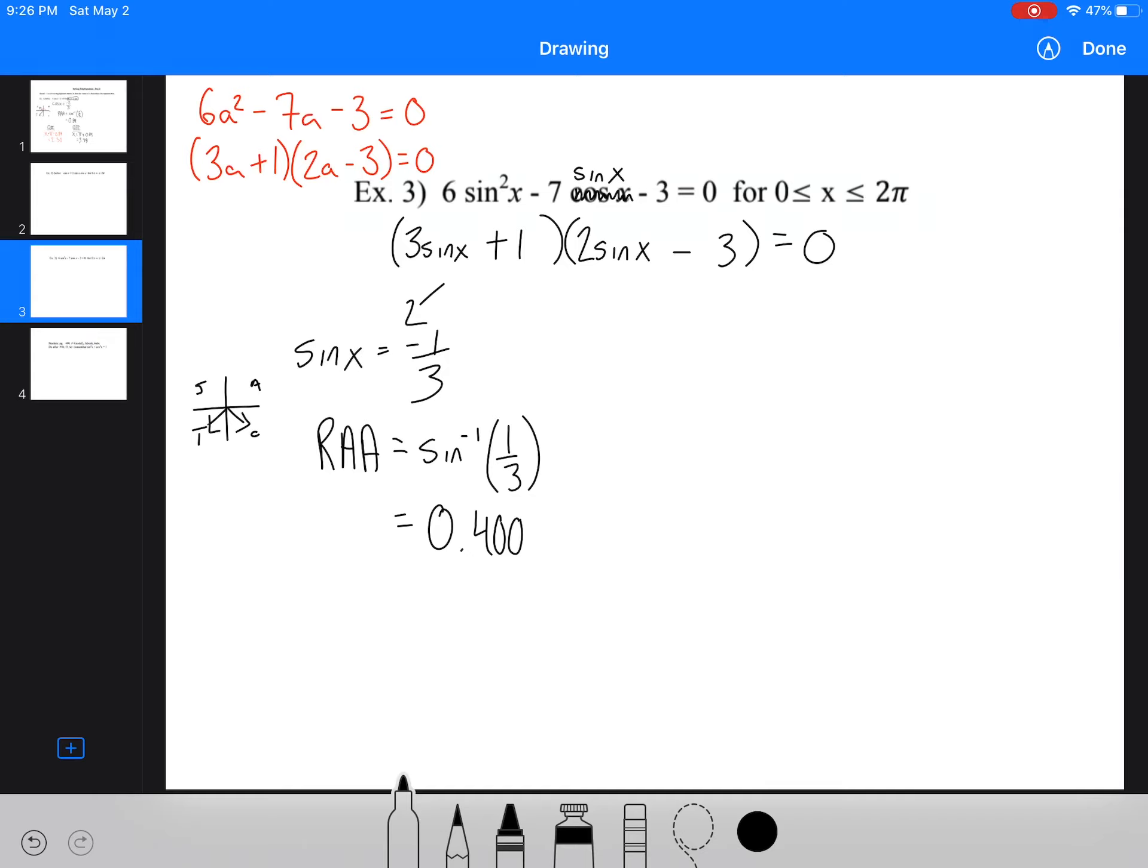So then in quadrant 3, we're going to have, what are we dealing with? x equals pi, because that's 180, plus 0.4. And pi plus 0.4, or pi plus that angle, I left the number in my calculator, we're going to get 3.48.